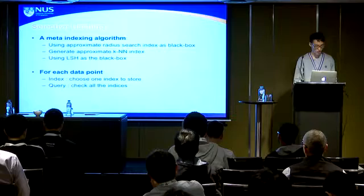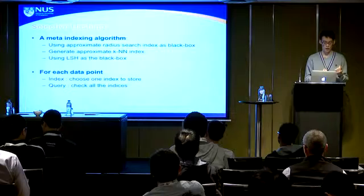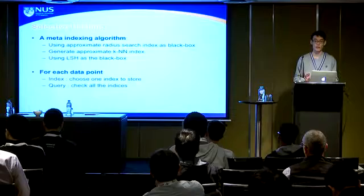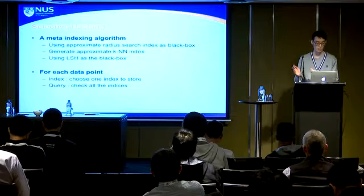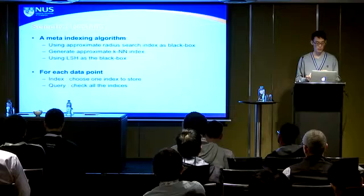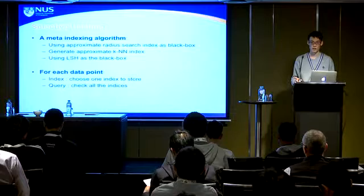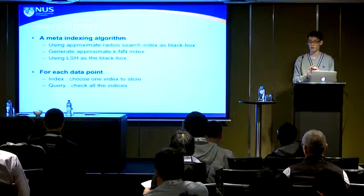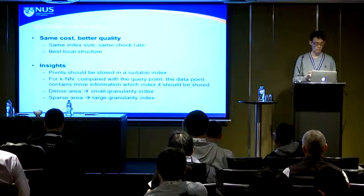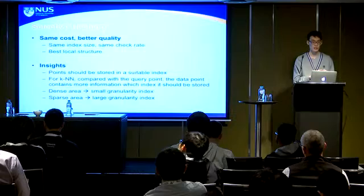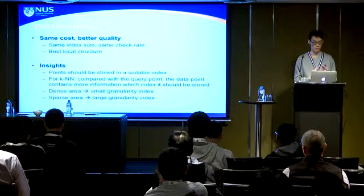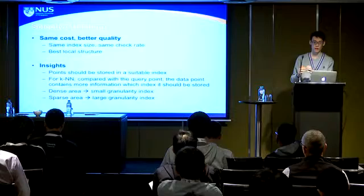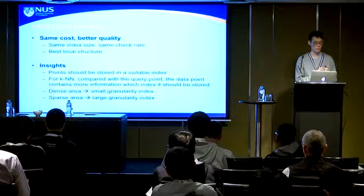We propose selective hashing, a meta-indexing method. It uses an approximate radius search index as a black box to generate approximate KNN indexes. For each data point, we only choose one index to store it, but when querying, we query all indexes. We create multiple indexes with different granularities. Points should be stored in a suitable index: in a dense area the KNN distance is small, so a fine-grained index is used; in a sparse area the KNN distance is large, so a coarse-grained index is used. The index selection is based on the data, not the query.